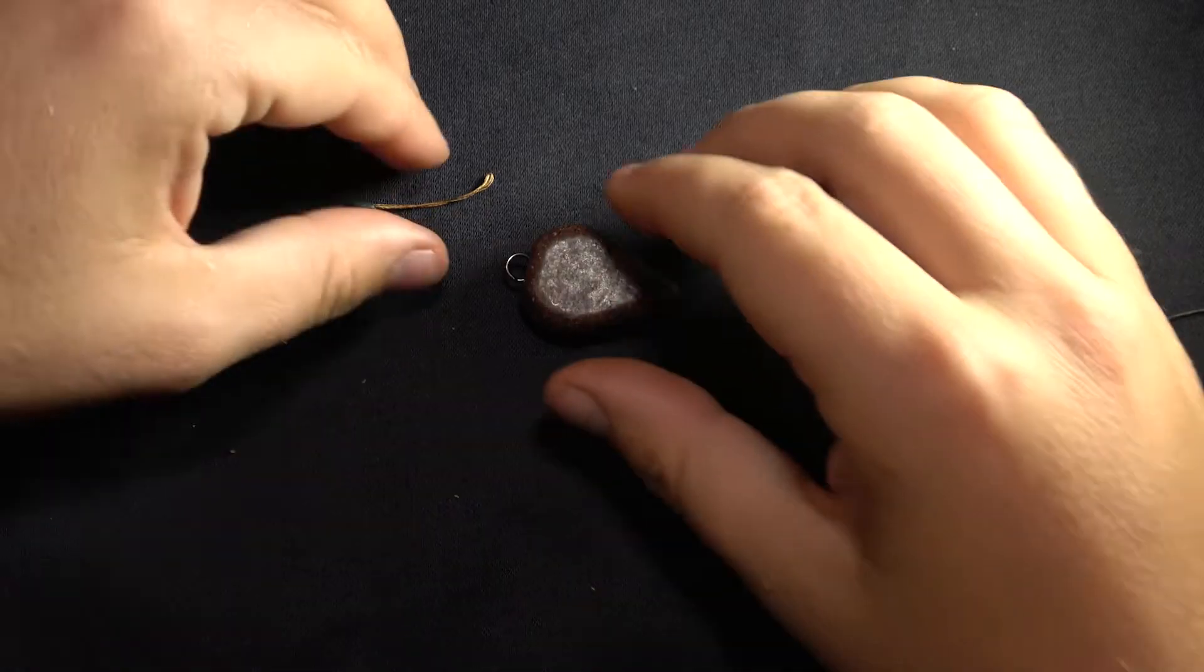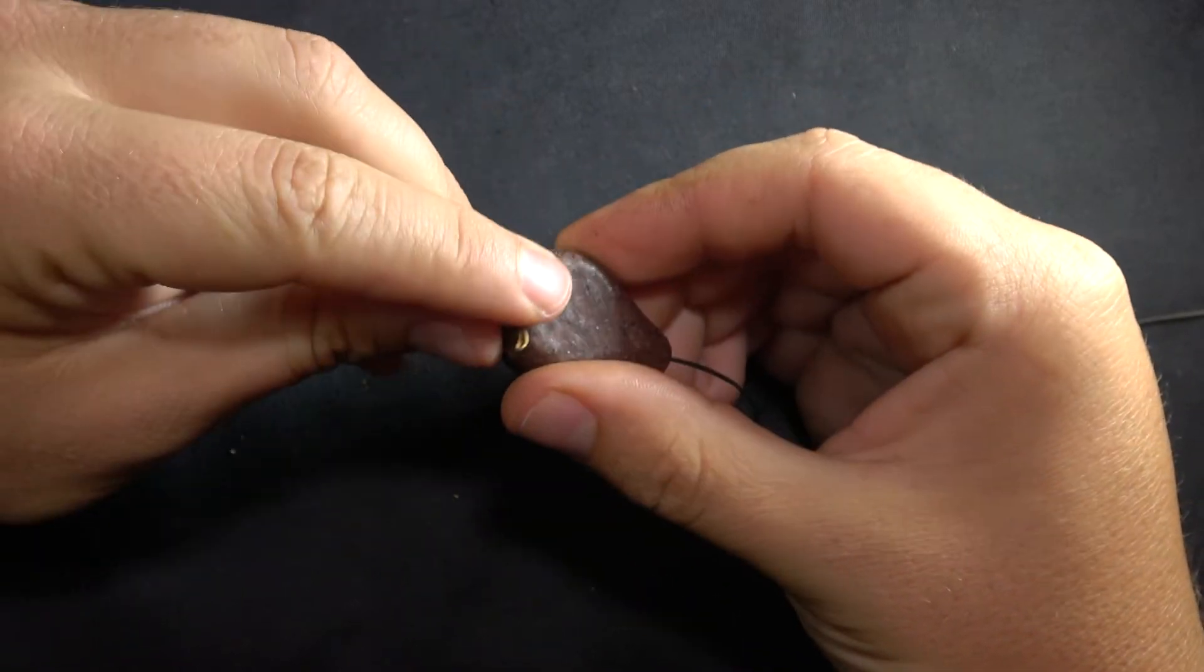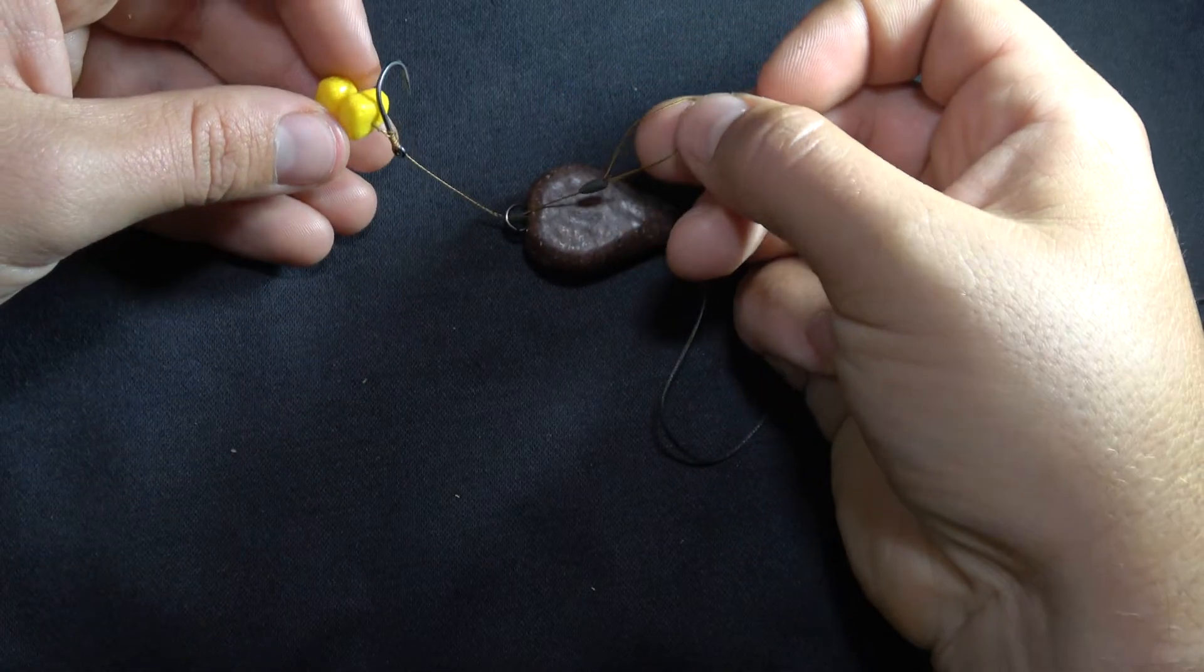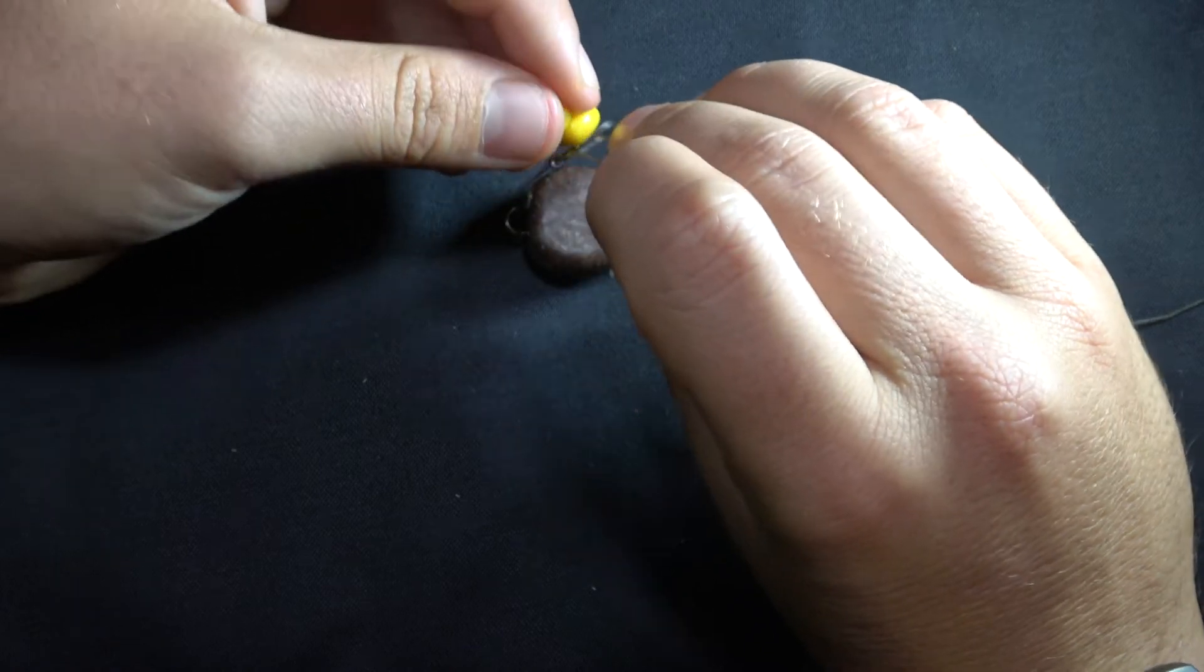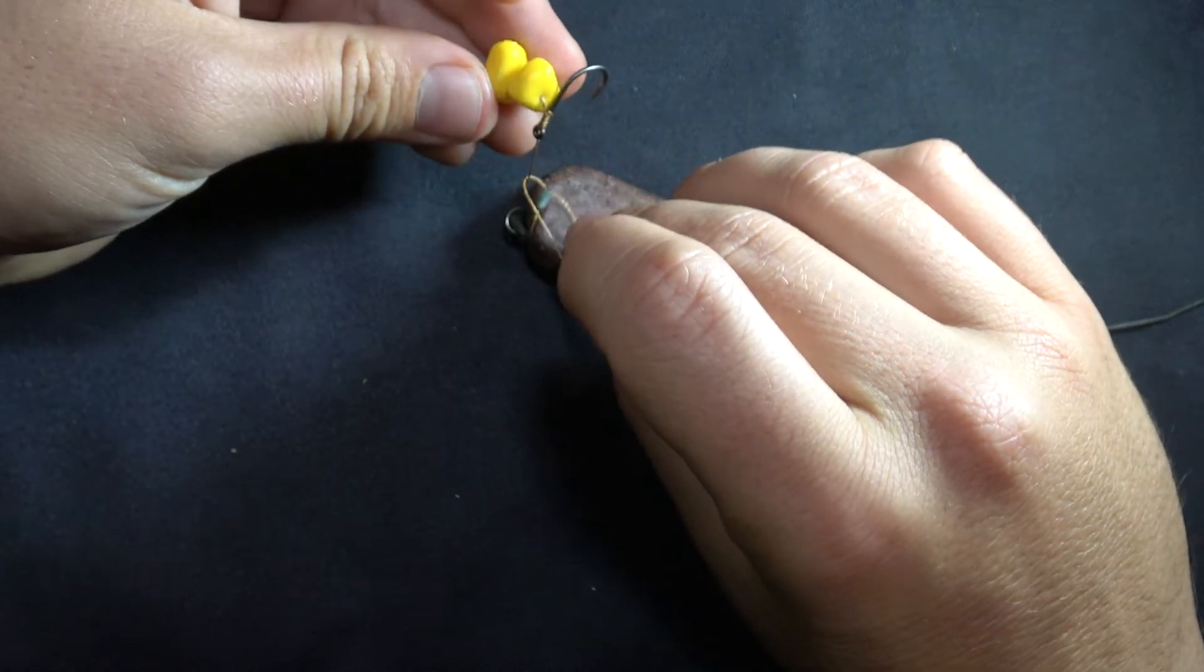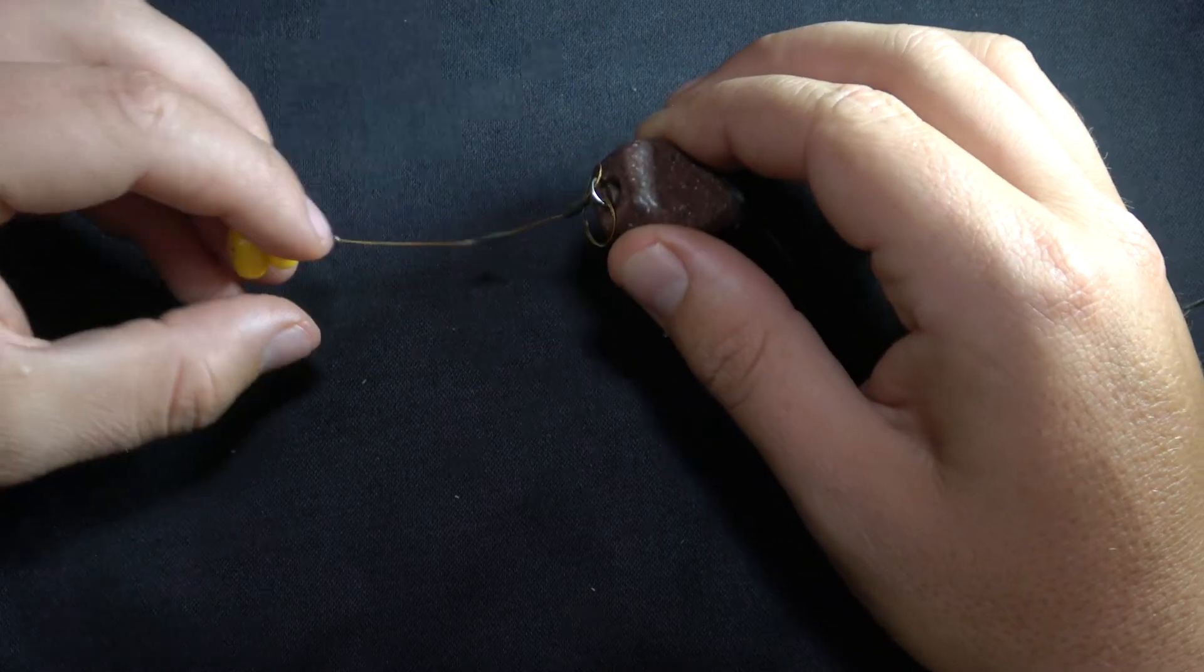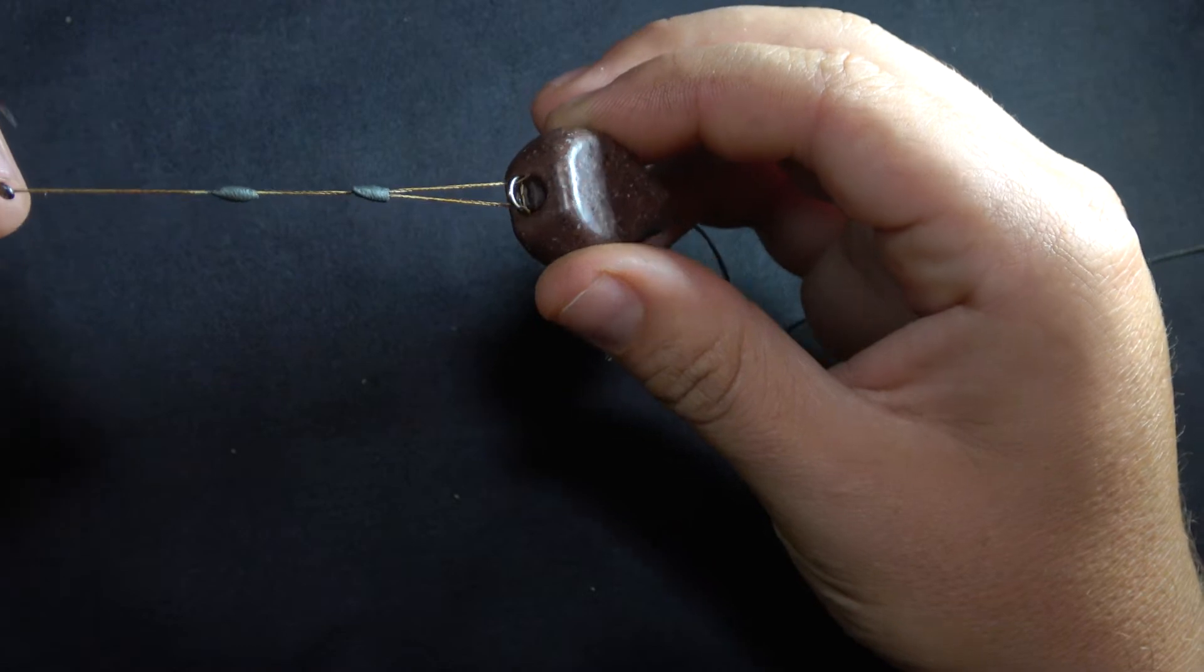Then grab your hook link, slide your figure of 8 loop knot through the ring. Open it up. Then slip your hook bait through your figure of 8 loop. And pull it down.